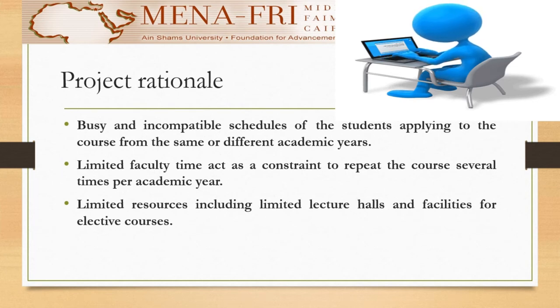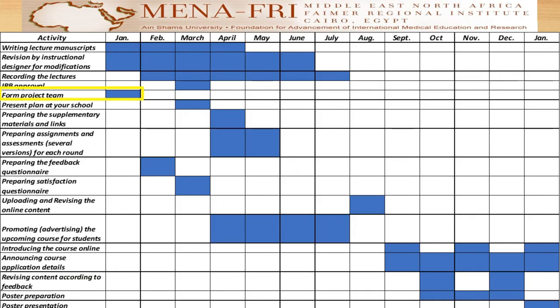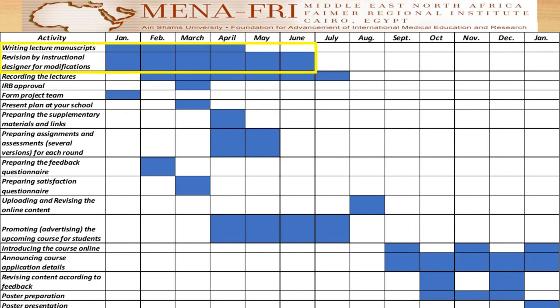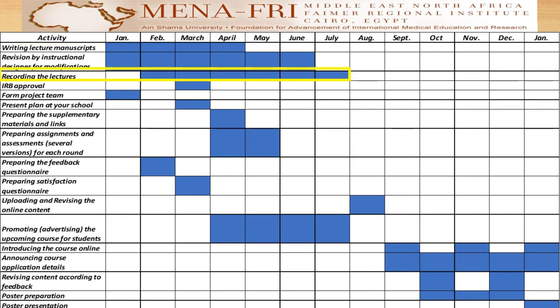This is my project plan outlined on a Gantt chart. In January, the first step was formation of the project team, then writing the lecture manuscripts, which was completed in April. This activity was alongside revising them by an instructional designer for modifications, which was supposed to be finished in June, however it was finished in July.